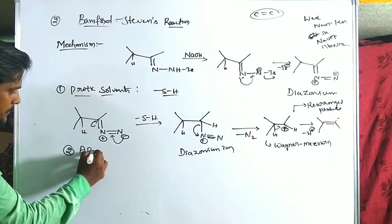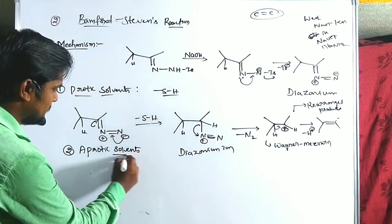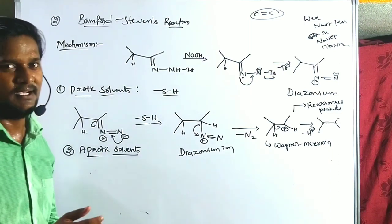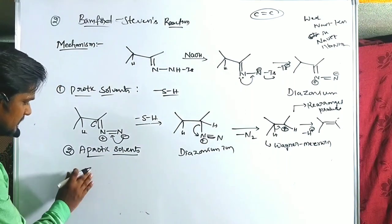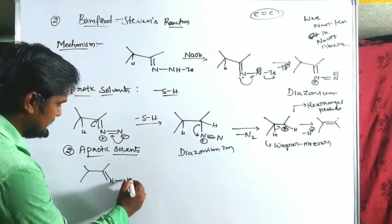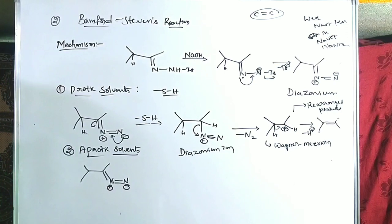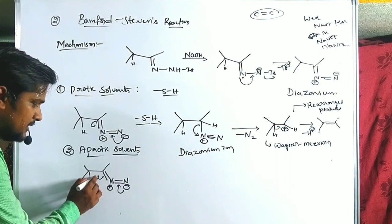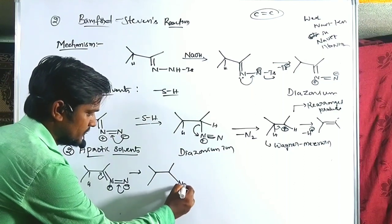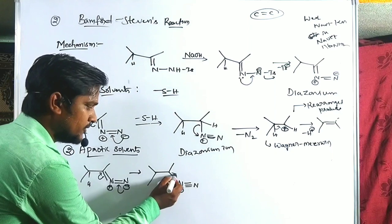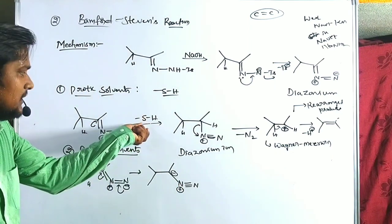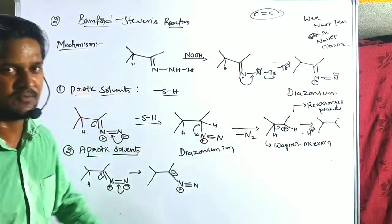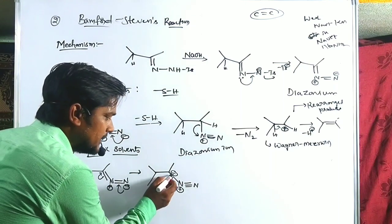The second case is aprotic solvents. In protic solvents, H⁺ ions are available, but in aprotic solvents there is no possibility of H⁺. In the aprotic mechanism, the diazonium compound forms a negative charge. Since no proton is available from the solvent, the negative charge cannot form a C-H bond. Instead, a carbanion species appears.